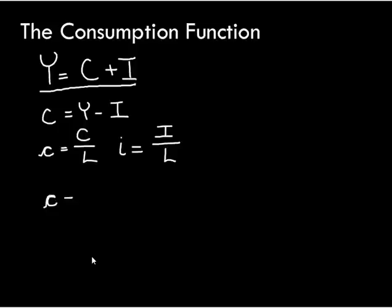Consumption per worker equals output per worker minus investment per worker. Taking this a step further, I know that little y equals little f of little k, because that's the per worker production function — it tells me output per worker given a certain amount of capital per worker. Is there a way I can rewrite i to make it a little more sense? There is.